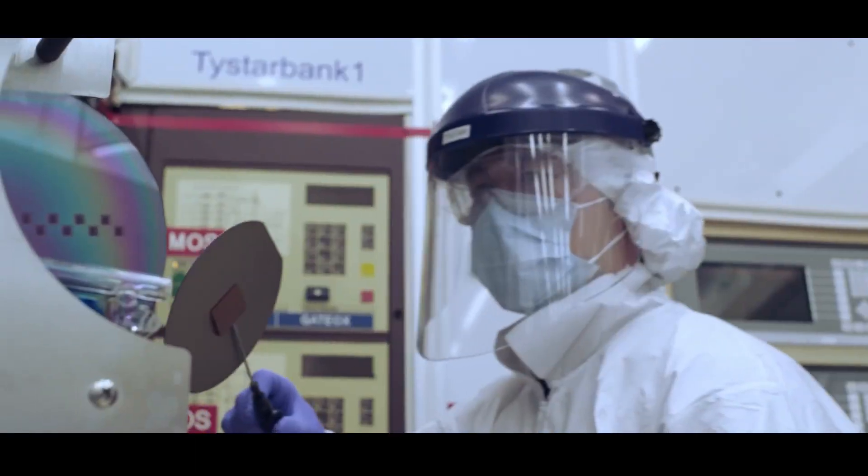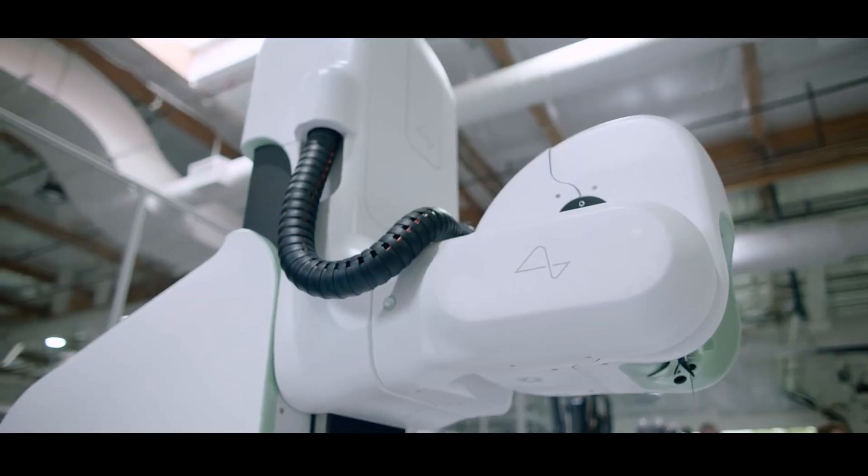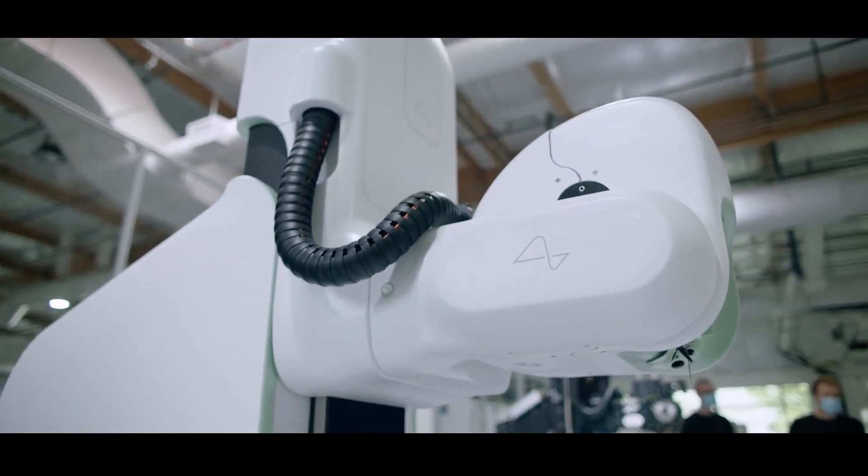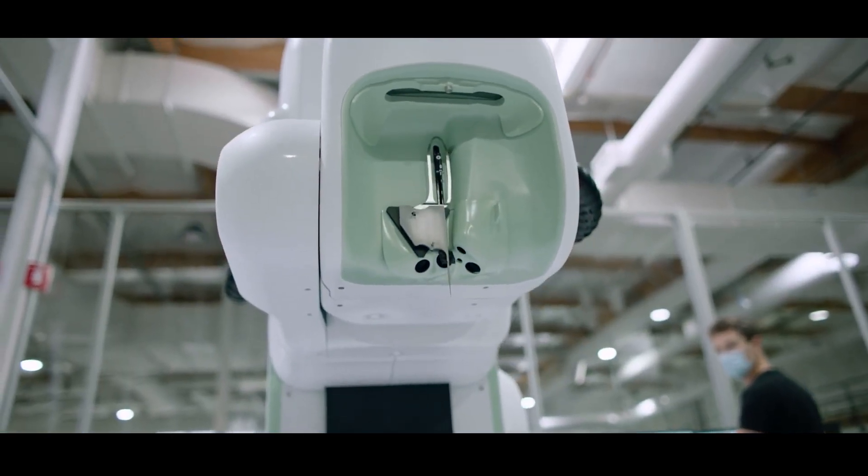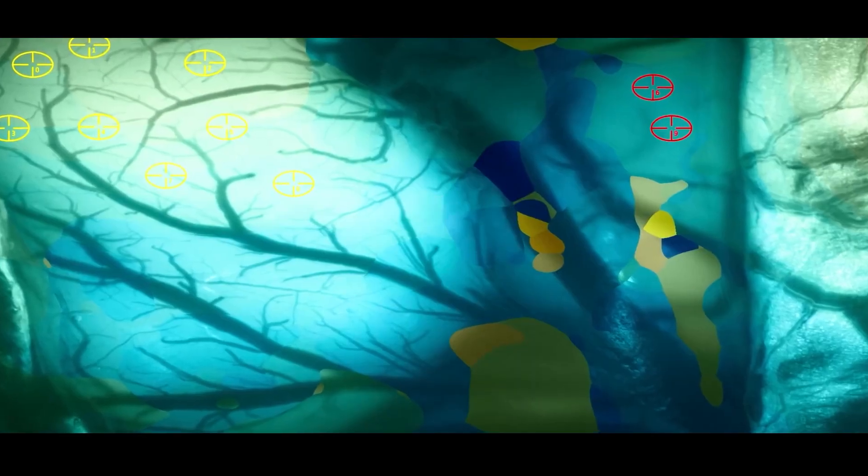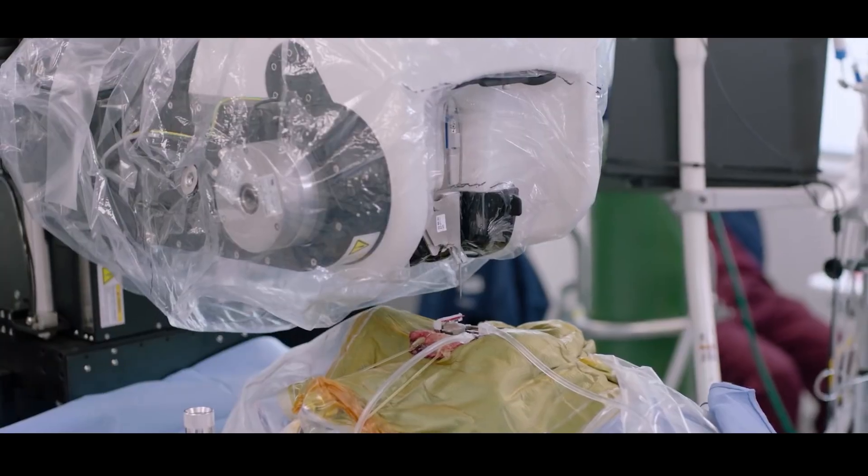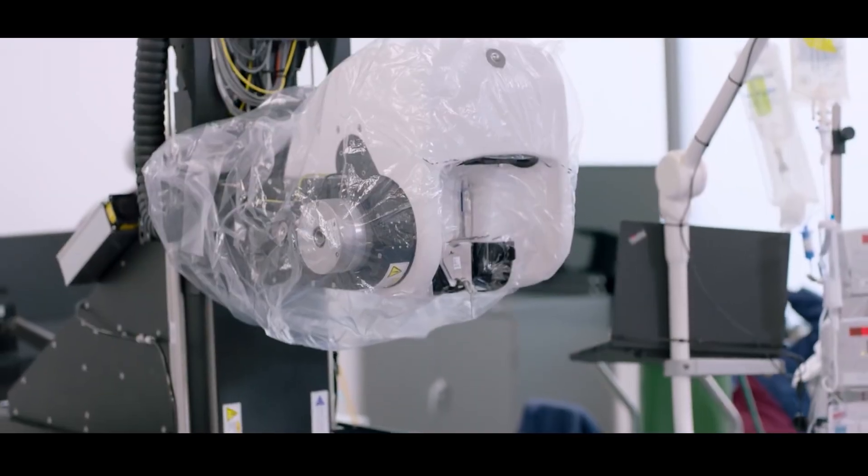The tungsten wire needles that the Neuralink robot uses to pierce the brain tissue are only 40 microns wide. Also, the shape of the needle tip is very important because it must move the wire into the cortex and then release it perfectly before the needle quickly pulls back out of the skin like a sewing machine.